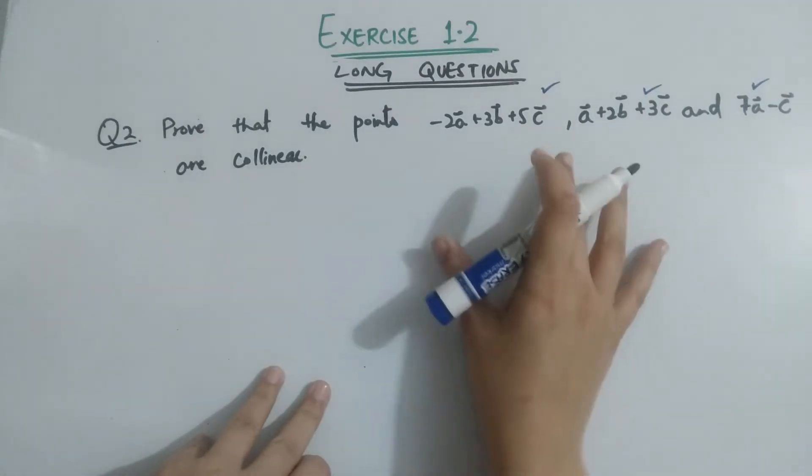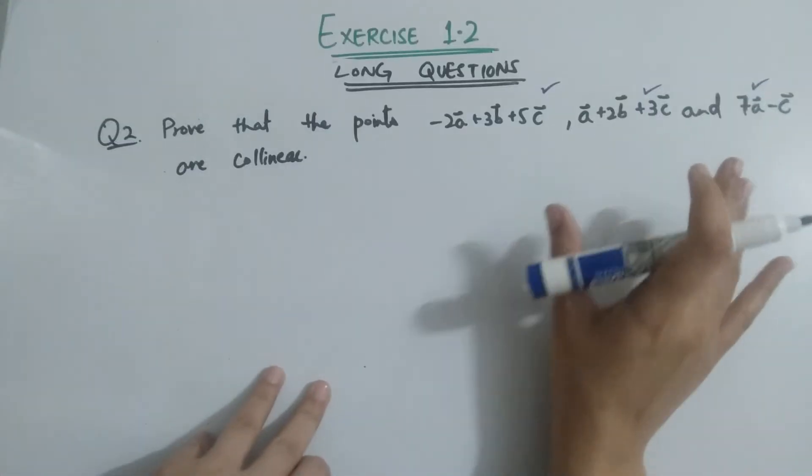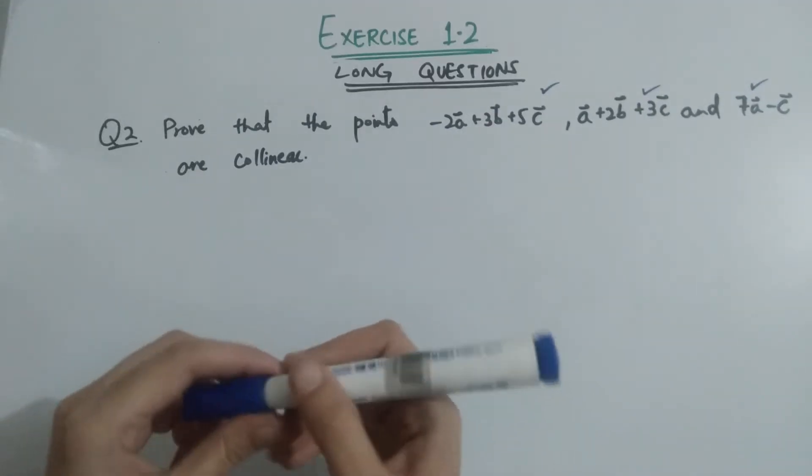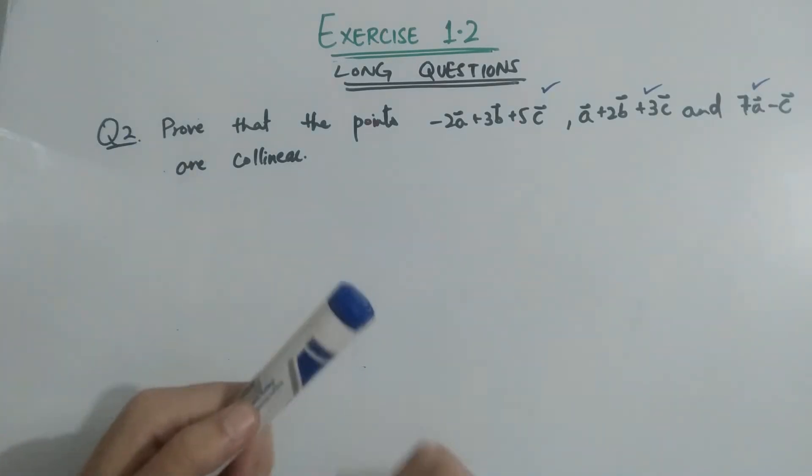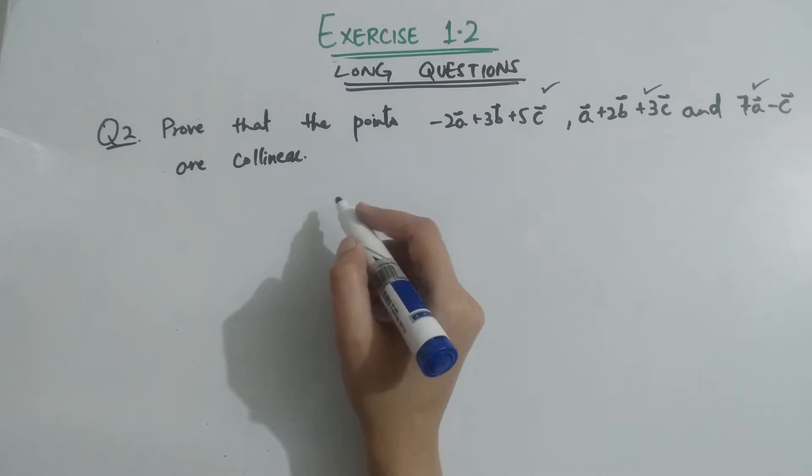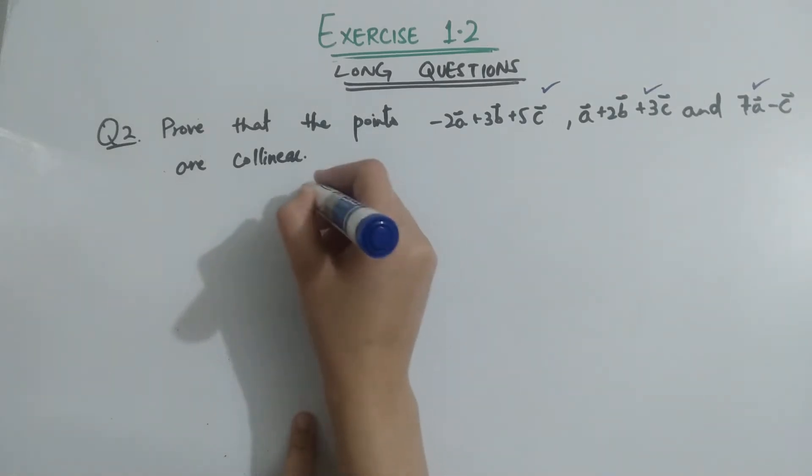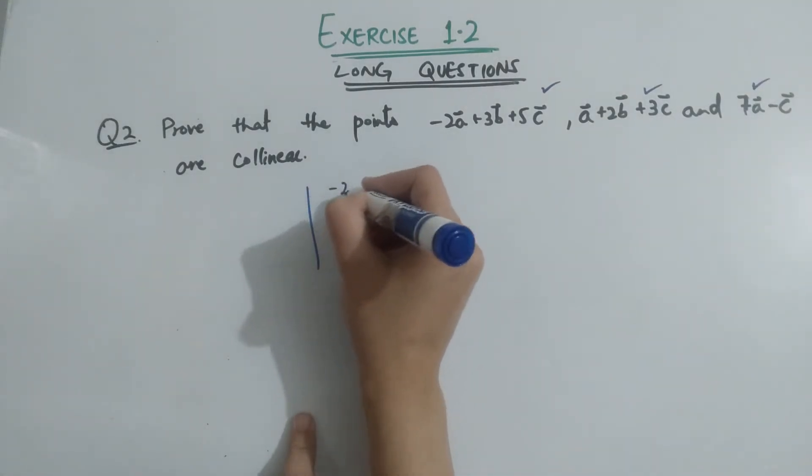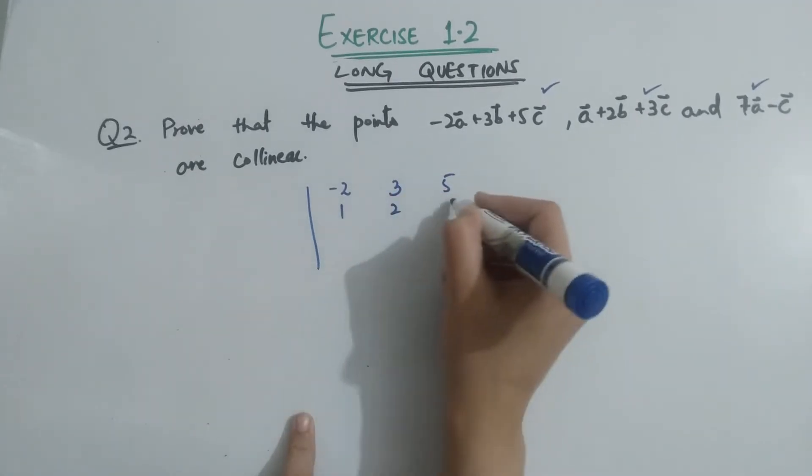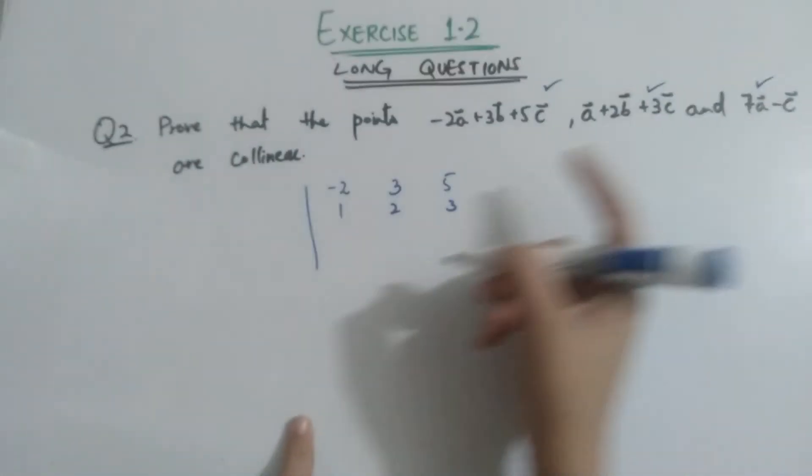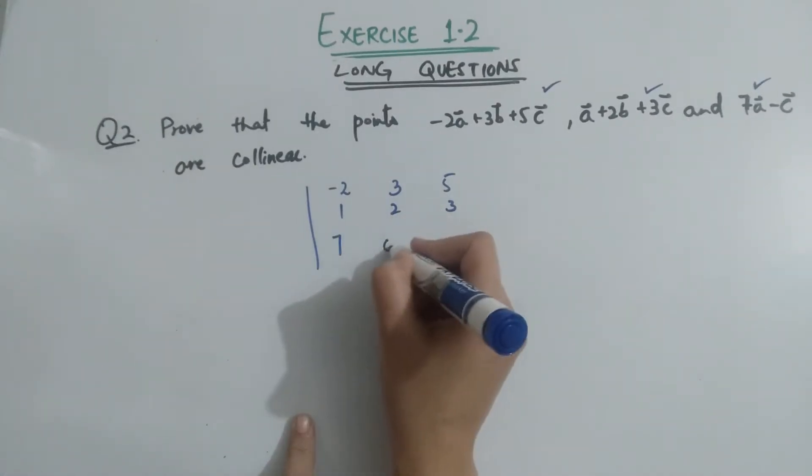We will solve the question to understand the determinant. Let's see: minus 2i plus 3j plus 5k, 1i plus 2j plus 3k, and 7i plus 0j minus 1k. We set up the determinant with these components: minus 2, 3, 5 in the first row, 1, 2, 3 in the second row, and 7, 0, minus 1 in the third row.